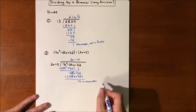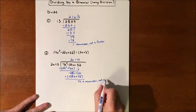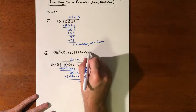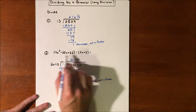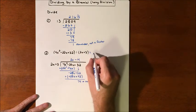Since we have a remainder, this is not a factor. And so if we were to take this quadratic and divide it by this linear, this binomial, we would get...